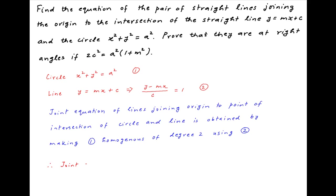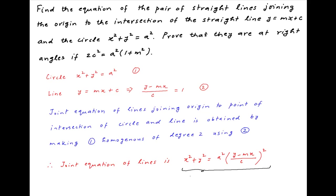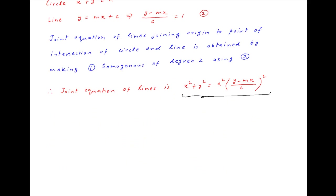Therefore, the joint equation of the pair of straight lines joining the origin to the point of intersection of the circle and the line is x² + y² — note that both terms are of degree 2 — is equal to a², which is of degree 0, multiplied by (y - mx)/c whole square. Note that this entire equation is homogeneous of degree 2.